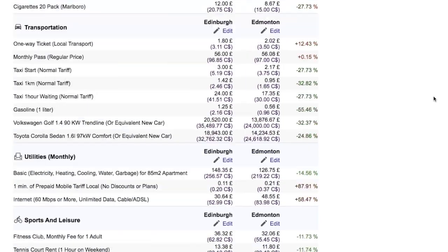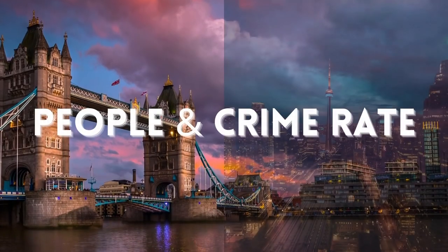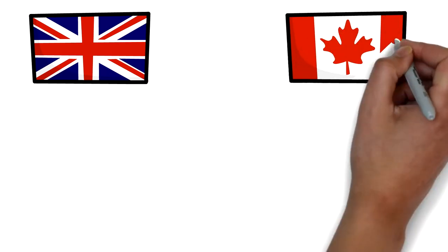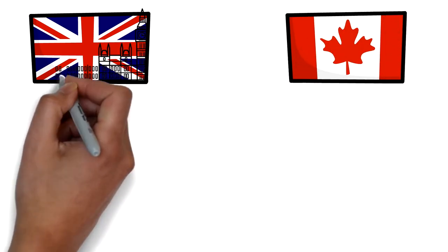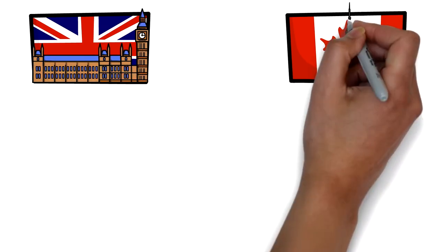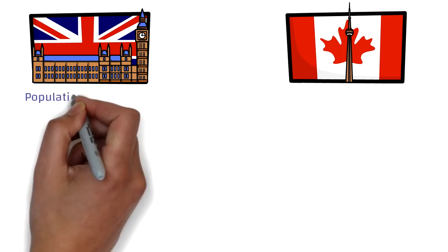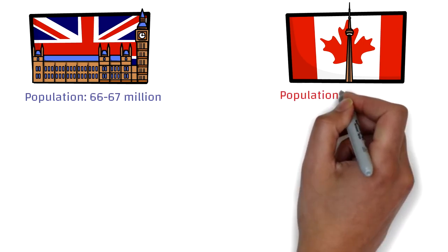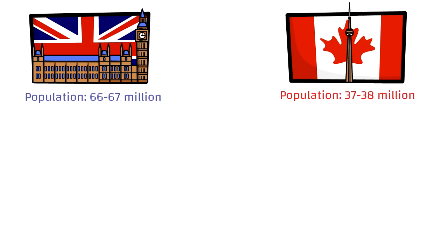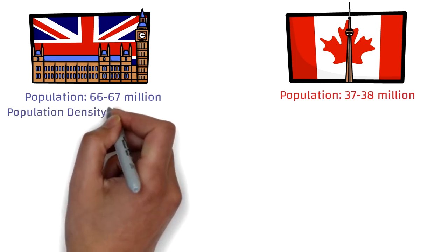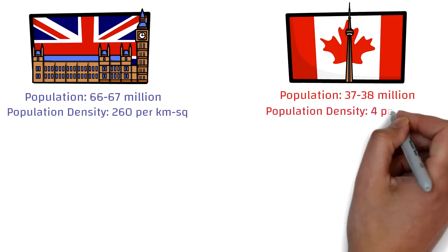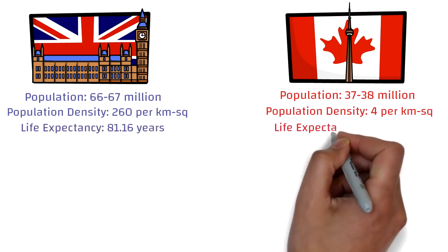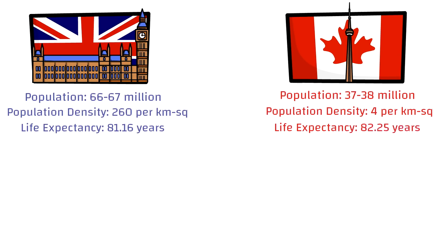Now let's talk about the people and crime rate. The population of UK is around 66 to 67 million while Canada's is 37 to 38 million. The population density of UK is much higher than Canada's. Despite the size difference, life expectancy in both countries is almost very similar. The official language in UK is only English, while in Canada it's English and French.